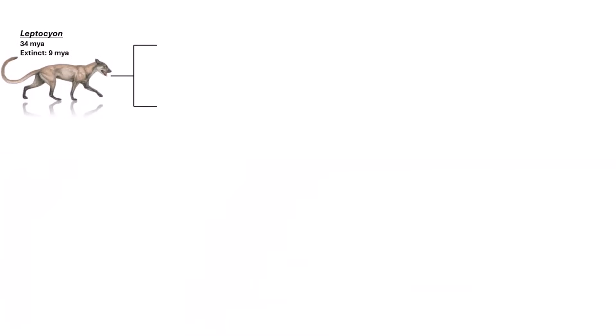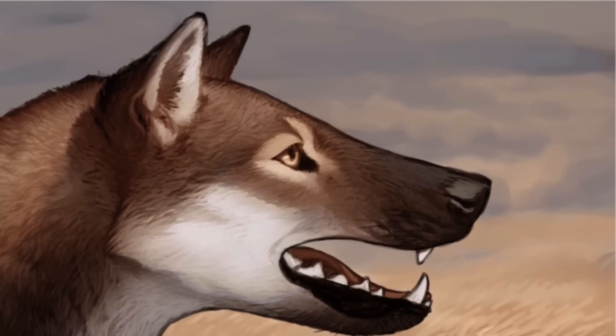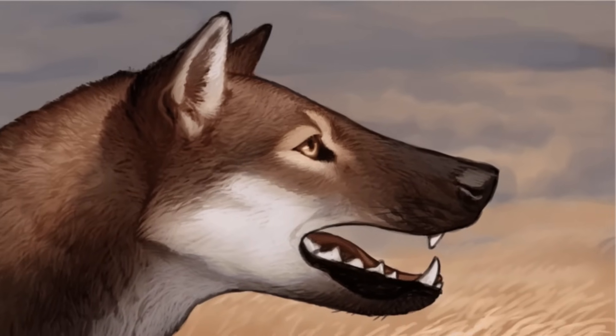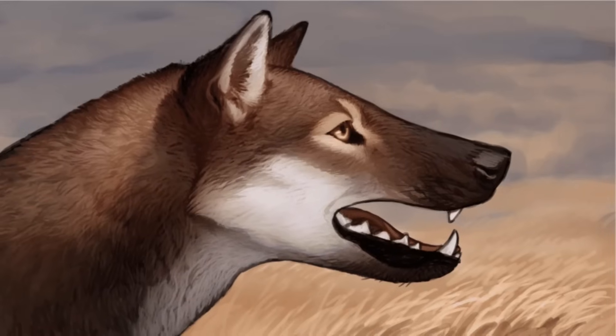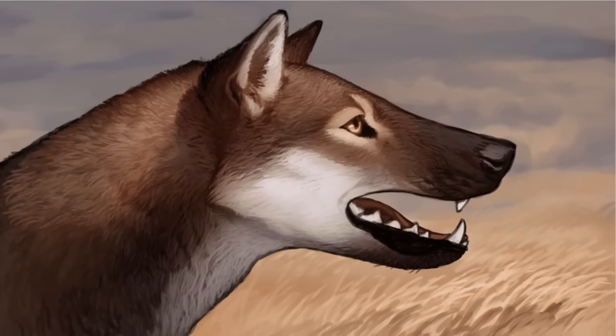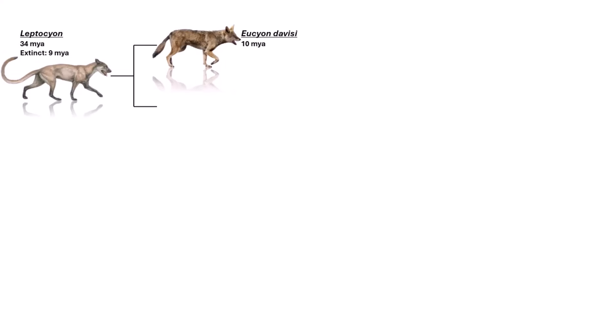Around 10 million years ago, a jackal-sized Canidae called the Eucyon was discovered, and it too lived in North America. One of its species, Eucyon davisi, spread out and invaded Eurasia around 6 to 5 million years ago. It is theorized that in North America, the Eucyon would eventually give rise to early members of the Canis genus, which includes wolves, dogs and coyotes. Another species called Eucyon phaeous may have also played a big role in the early evolution of the Canis genus, and many think it may have marked the beginning of the wolf-like canids.